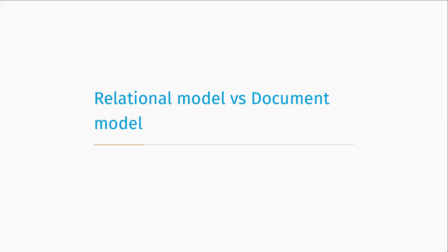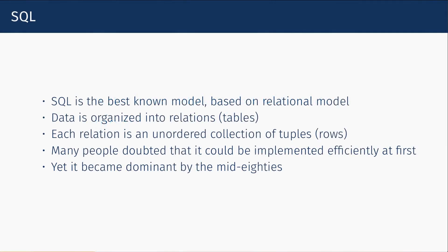Most of what I want to talk about is the relational model versus the document model. SQL is the best known model based on the relational model, which was developed originally in 1970. In that model, data is organized into relations, which are called tables, and each relation is an unordered collection of tuples, which are called rows. Many people doubted in 1970 that it could be implemented efficiently, but by the mid-80s it became the dominant form of data representation throughout the world.